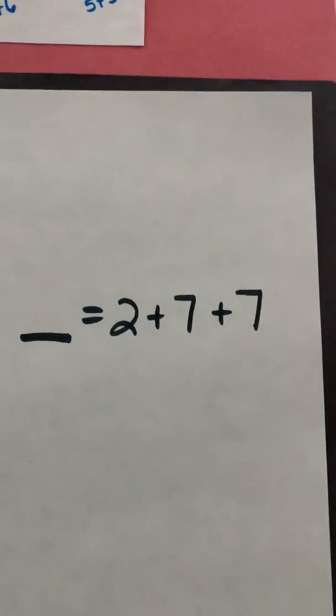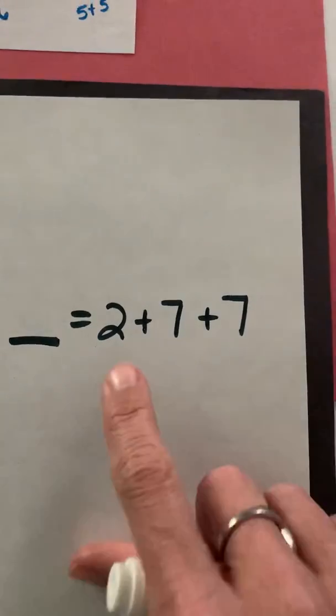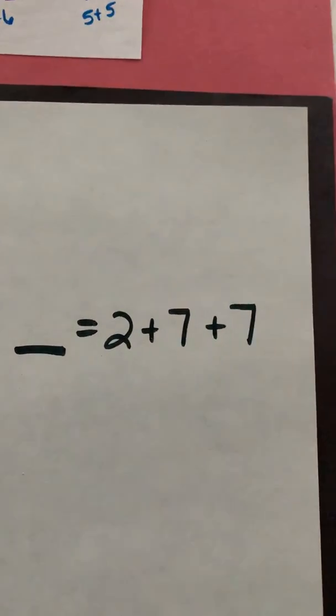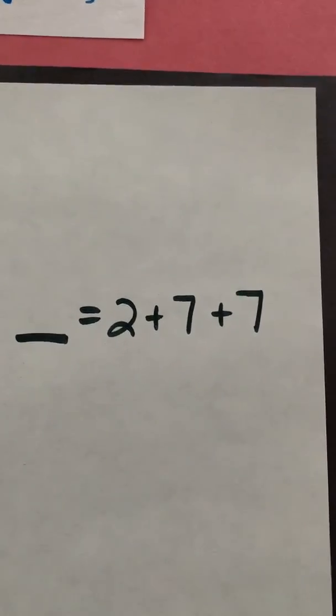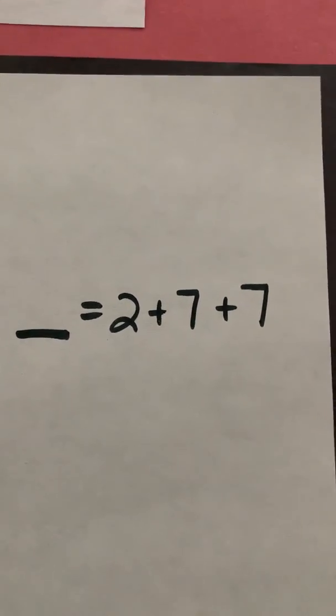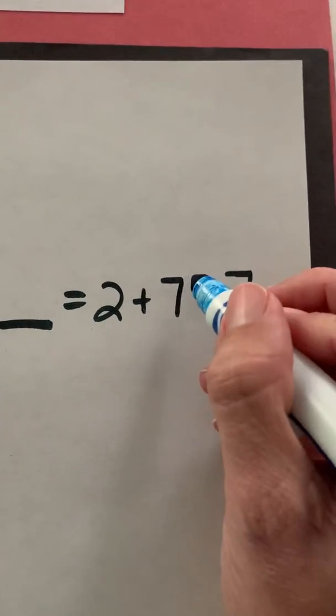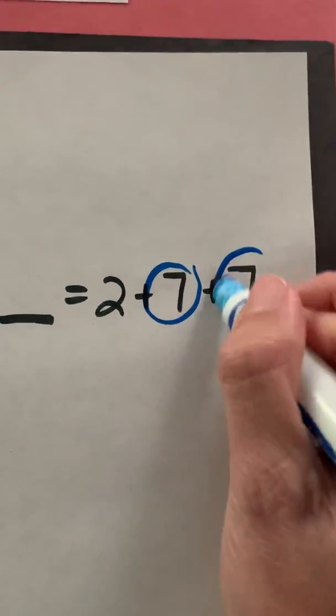So let's get started. Remember our goal was that we are going to be adding three addends, and we're going to look for doubles. We want to add our doubles first and then add on the last addend. So when I'm looking here, I can see that my doubles would be 7 and 7.